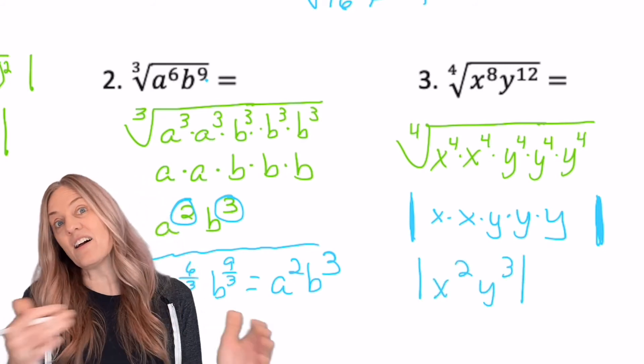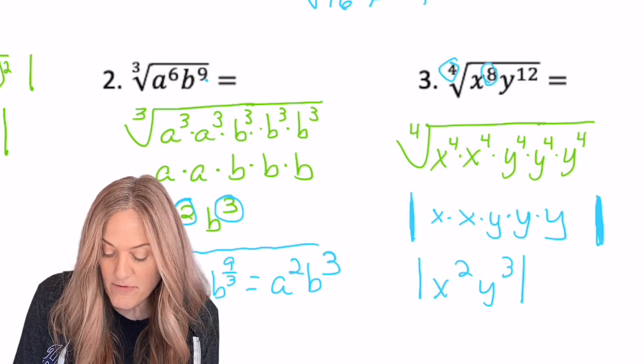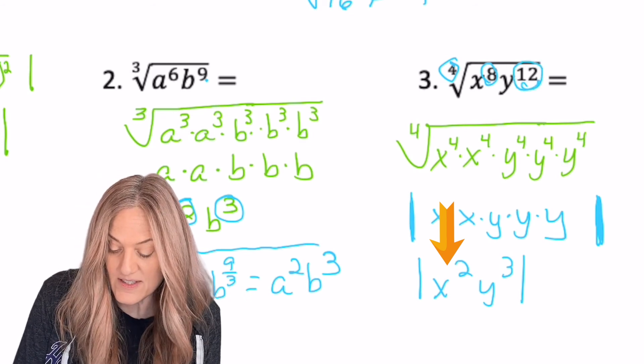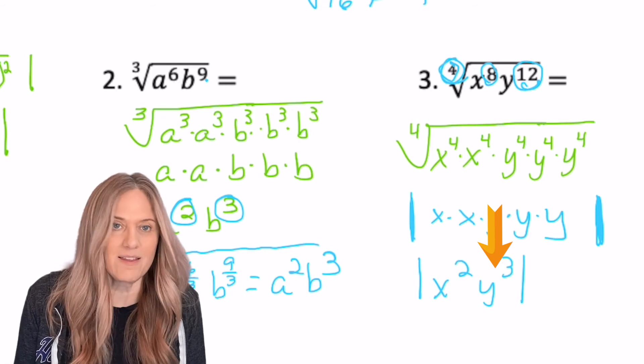but I'm still trying to get you to understand the concept. So we would end up with absolute value of x squared y cubed. And did that other thing work? Well, yeah. If I have eight divided by four, I do get x squared. And then 12 divided by four, I get three. That's just the quick way to get there. It's the same idea.